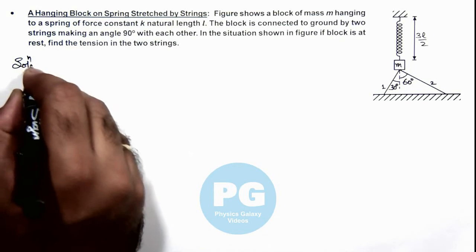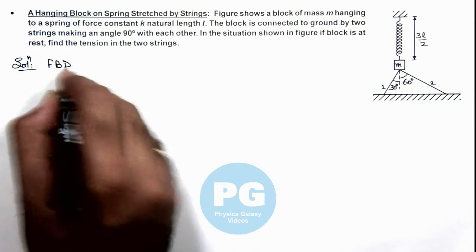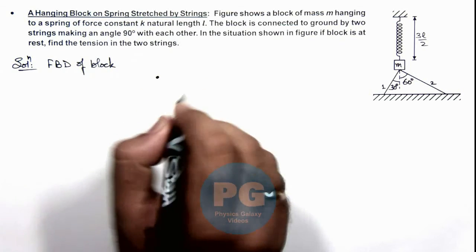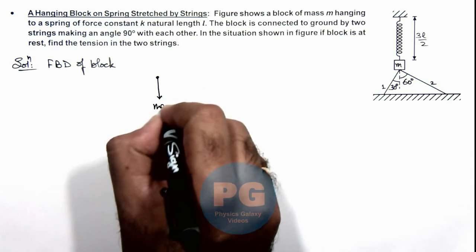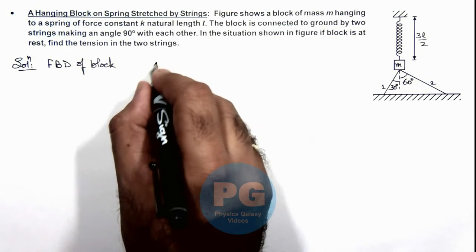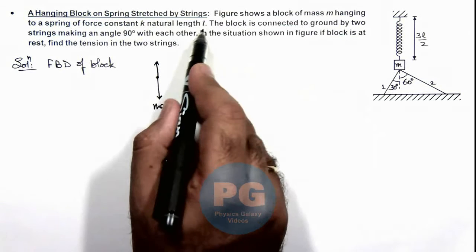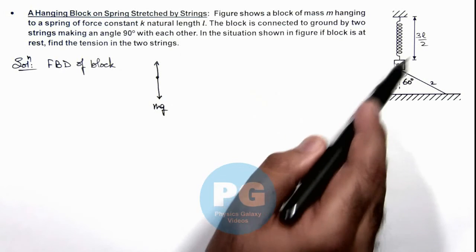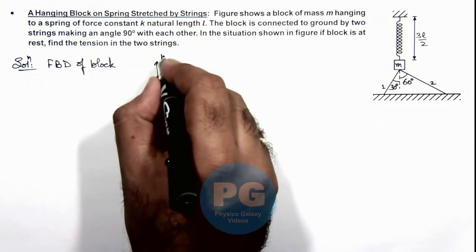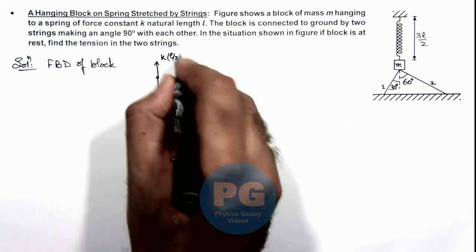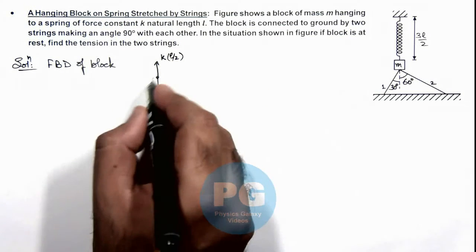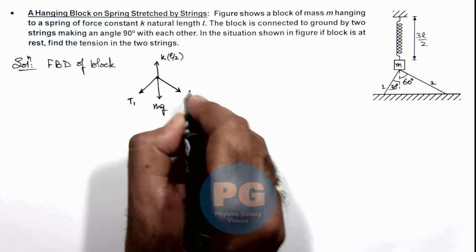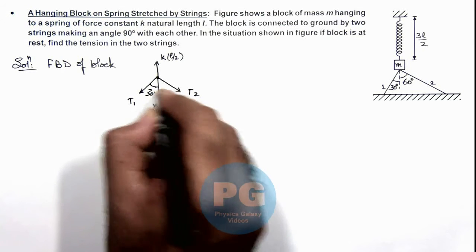Let us first draw the free body diagram of the block. On the block, downward its weight mg is acting. Upward will be the spring force — since the natural length is l and the length at equilibrium is 3l/2, the spring is elongated by l/2, so it experiences a spring force of k times l/2. Along with this, in strings 1 and 2, two tensions T1 and T2 are present, where the angles are 30 degrees and 60 degrees respectively.